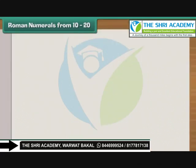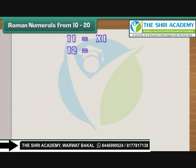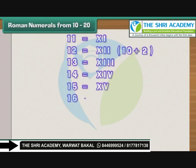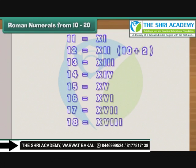Roman numerals from 10 to 20. 11 is 10 plus 1, so it is written as XI, meaning 10 plus 1. 12 is written as XII, meaning 10 plus 2. Similarly, 13 is XIII, 14 is XIV, 15 is XV, 16 is XVI, 17 is XVII, 18 is XVIII, 19 is XIX, and 20 is XX.